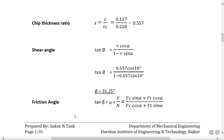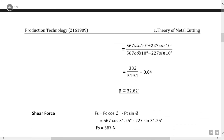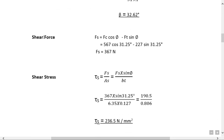Friction angle: tan beta = mu = F/N. Here F = Fc sin alpha + Ft cos alpha, and N = Fc cos alpha + Ft sin alpha. Substituting Fc = 567 N, Ft = 227 N, and alpha = 10°, we get mu = 0.64, so beta = 32.62°.